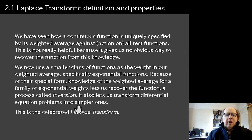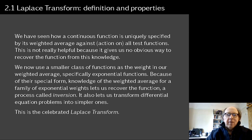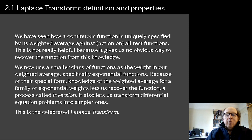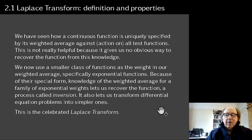This first page is a little preamble — a segue from distributions, which we defined in terms of their action on test functions. We think of it as a weighted average on a test function, where in the case of something like the delta function, the weight is entirely concentrated at the origin. Now what we do is narrow down the class of functions we use for the weight to exponentials, and this lets us do much more specific things with our averages. That average is now called the famous Laplace Transform.